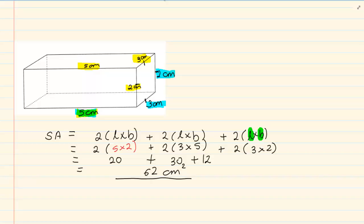So our final total is sixty-two. Now it is going to be centimeter squared. Why centimeter squared? We are working with area. We are multiplying two dimensions. Length times breadth.